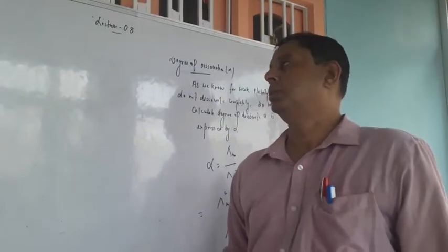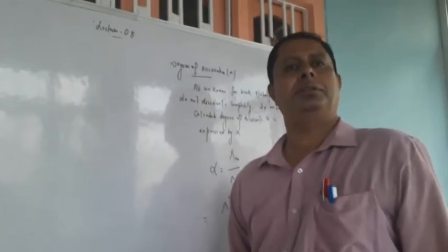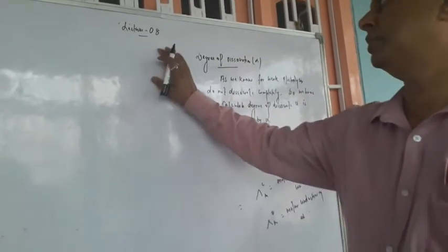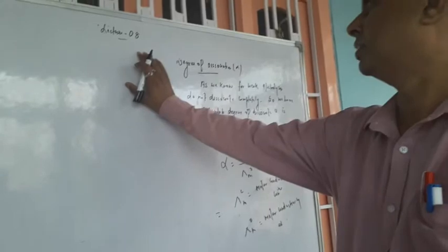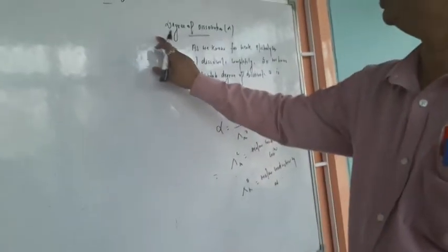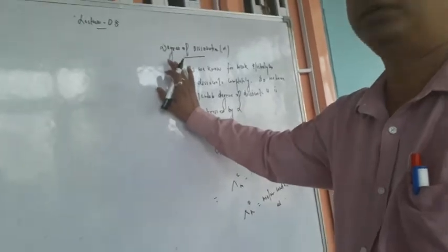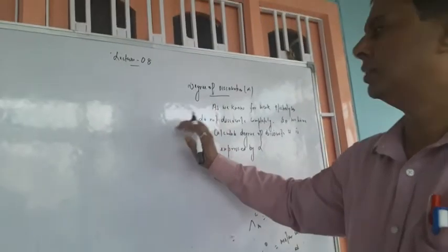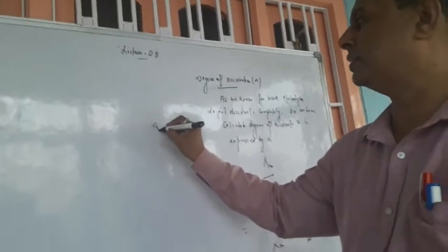Hello, student. This is lecture number eight. This is the continuous part from previous lecture seven. In earlier lecture, we have studied the degree of dissociation. As we know, weak electrolytes like acetic acid do not dissociate completely.